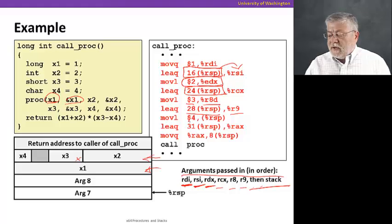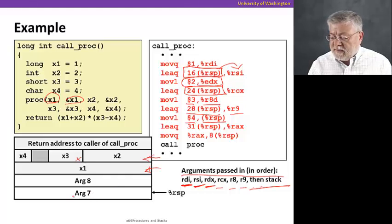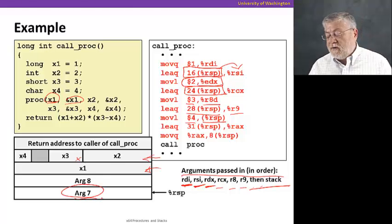Lastly, we'll move four into where the RSP is pointing right now. Remember, the parentheses are the reference to that. And that's argument number seven put onto the stack at that location.